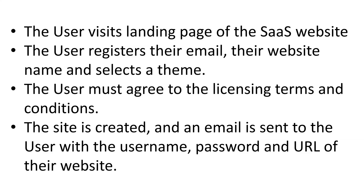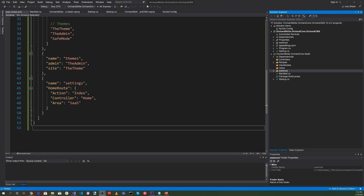Let's talk about how the SaaS module is going to work. First, the user visits the landing page of the SaaS website. The user registers their email, their website name, and selects a theme. The user must agree to the licensing terms and conditions. Once they submit this information, the site is created and an email is sent to the user with the username, password, and URL of their new website.